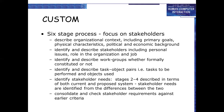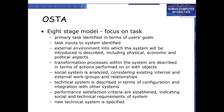CUSTOM also identifies and describes task-object pairs — the tasks to be performed and the objects used. Stakeholder needs are identified by stages two to four, described in terms of both the current and proposed system. The differences between the two are used to identify needs, which are then consolidated and checked against earlier criteria.